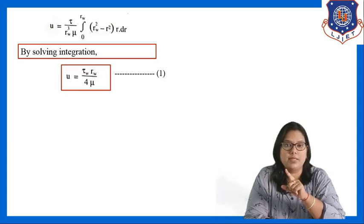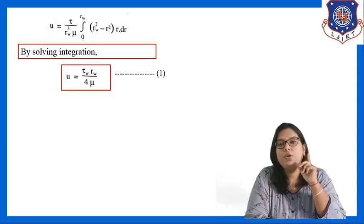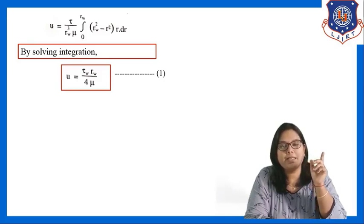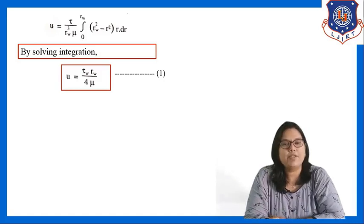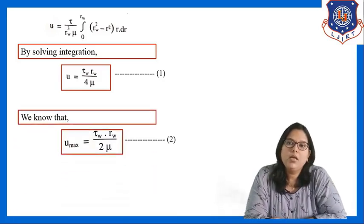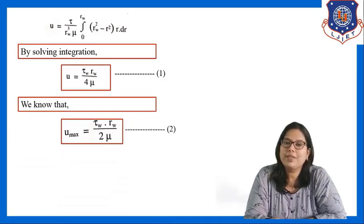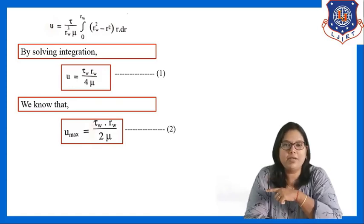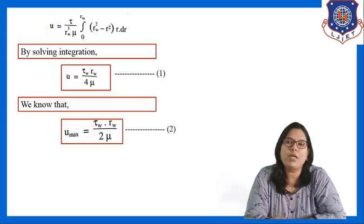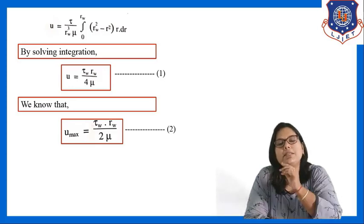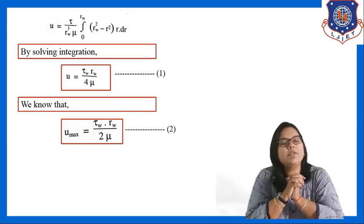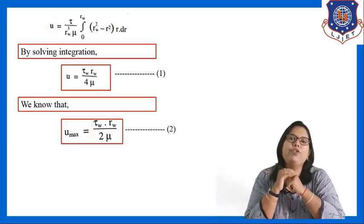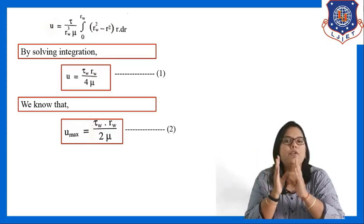This ū is the average velocity, giving equation 1: ū = tau_w · r_w / (4·mu). The maximum velocity equation derived earlier in today's session is equation 2: u_max = tau_w · r_w / (2·mu). Now we have two equations — equation 1 for average velocity and equation 2 for maximum velocity — and we need to prove that average velocity is one-half of maximum velocity.